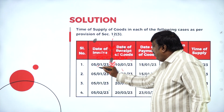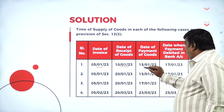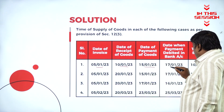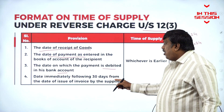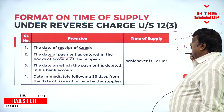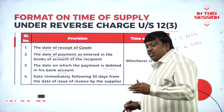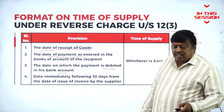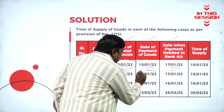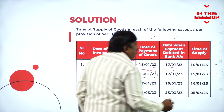Date of invoice is 5th January, receipt of goods 10th January, date of payment 15th January, date when payment debited to bank account 17th. The date immediately following 30 days from the date of issue invoiced by the supplier is more than 30 days here. In this three, whichever is earlier will be considered — 15th January is the answer for time of supply.